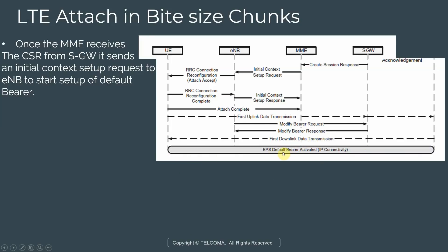Once those steps are completed, the downlink transmission can start. The default bearer is activated and the UE can send and receive data with full LTE service. This wraps up the LTE initial attach call flow. It is recommended to go through this call flow a couple of times, and if any messages are unclear, there are good online resources available for each of these messages.